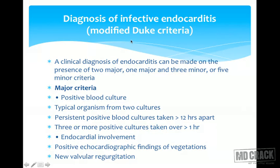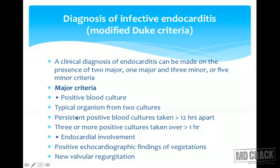The modified Duke's criteria is used for diagnosis of infective endocarditis. A clinical diagnosis can be made on the presence of two major criteria, or one major and three minor, or five minor criteria. The major criteria include: positive blood culture with a typical organism from two cultures, or persistent positive blood cultures taken more than 12 hours apart, or three or more positive cultures taken over one hour apart; and endocardial involvement with positive echocardiographic findings of vegetations or new valvular regurgitation.